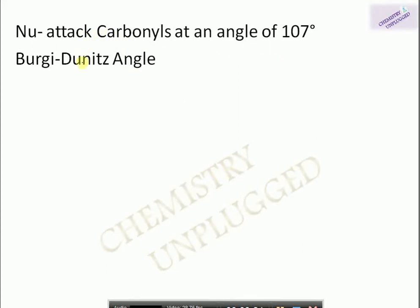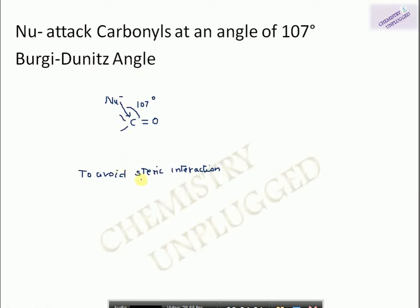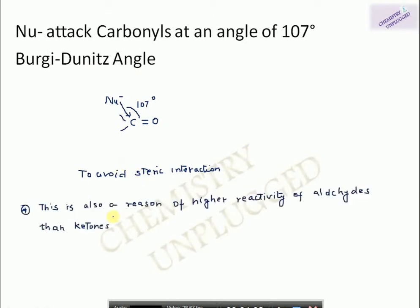The nucleophile attacks the carbonyl at an angle of 107 degrees, known as the Bürgi–Dunitz angle, named after its discoverer. This angle exists to avoid steric interaction and is also a reason for the slower reactivity of acetone compared to acetaldehyde. In ketones we have two R groups which cause hindrance to the approaching nucleophile, whereas in acetaldehyde we have one hydrogen and one methyl group, making it easier for the nucleophile to approach.